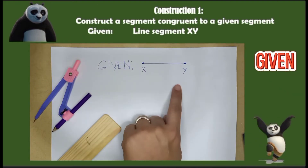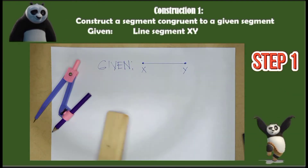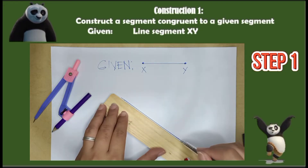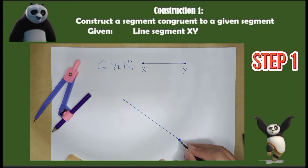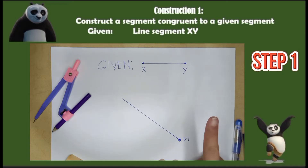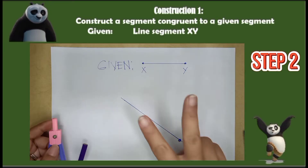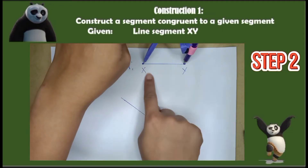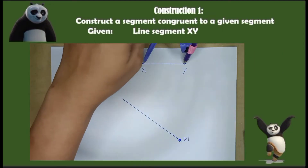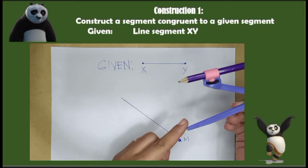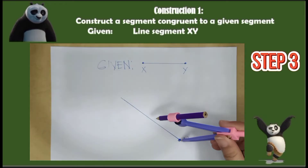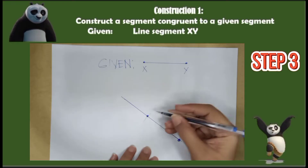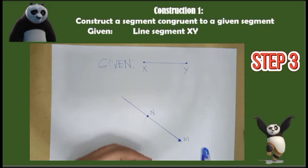Now I will show you the actual construction. Here is our given. Step 1: Draw a straight line and name a point on it as point M. Step 2: Measure the opening of line segment XY — here is the distance of point X and point Y. Step 3: Now place it at point M, draw a point on the other end, and name it point N.